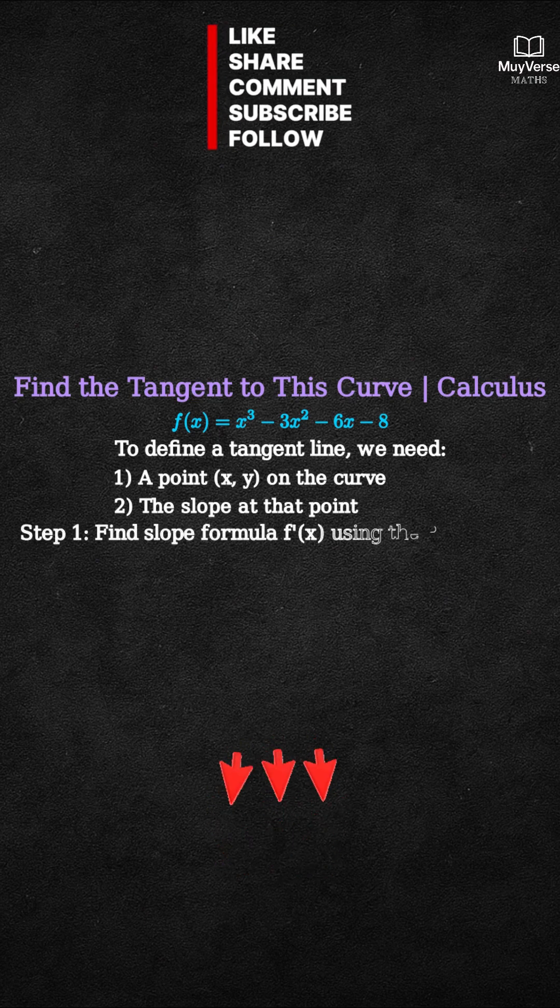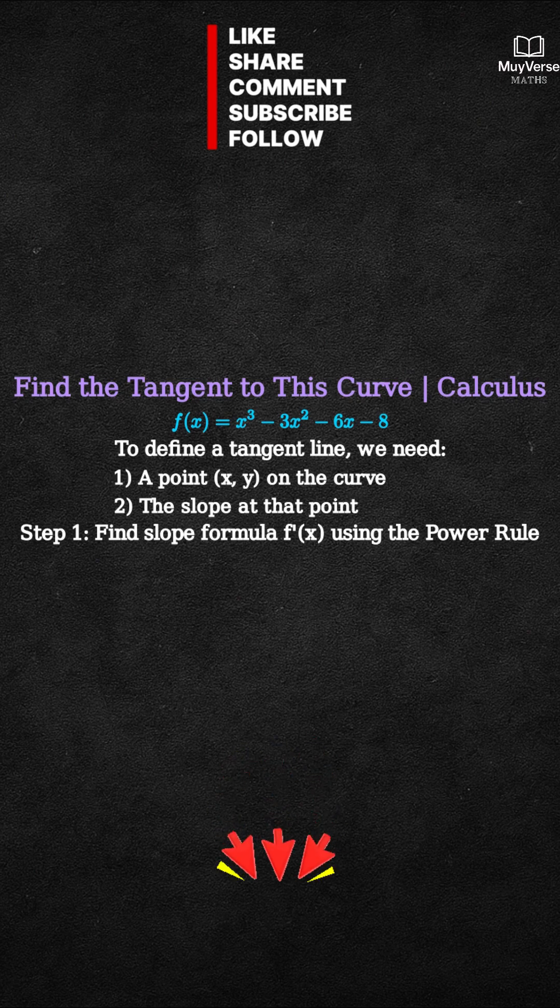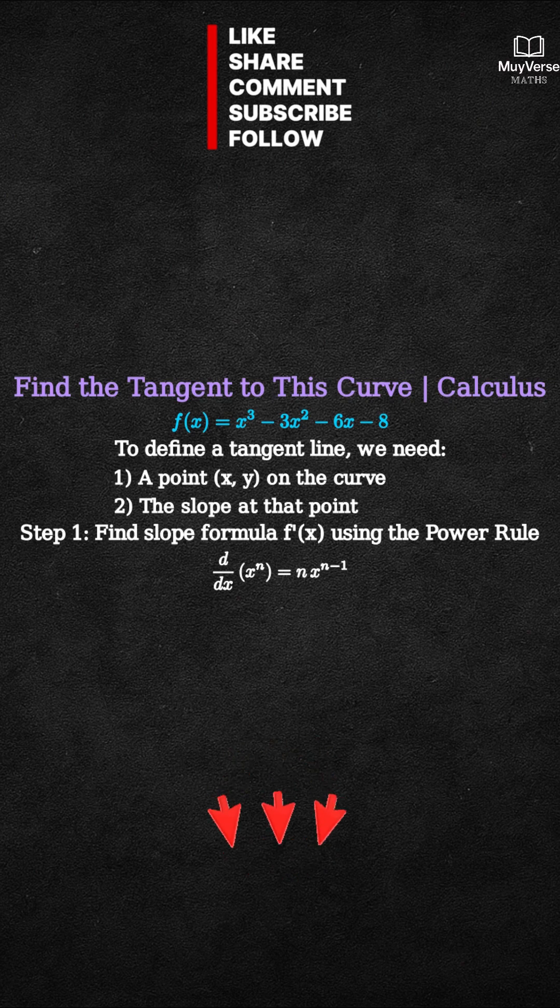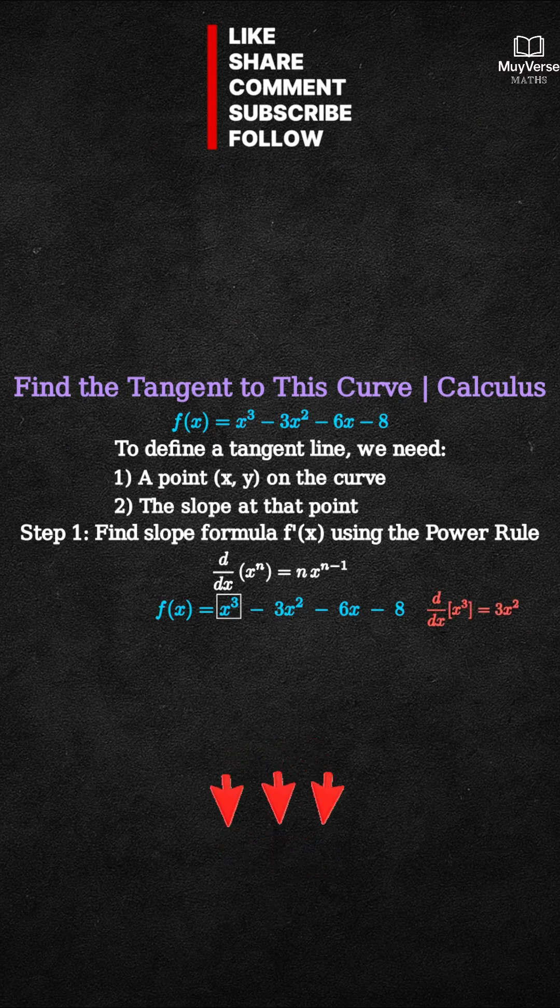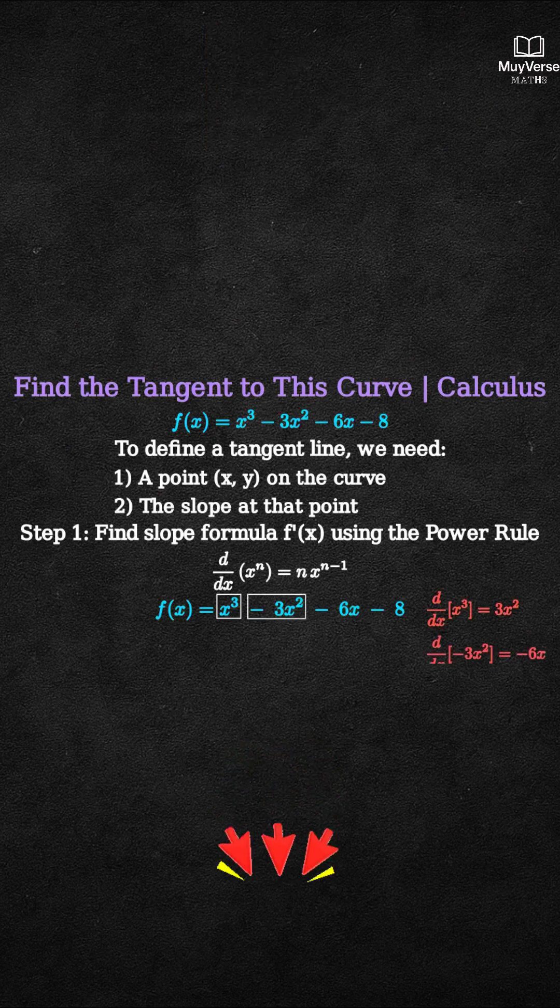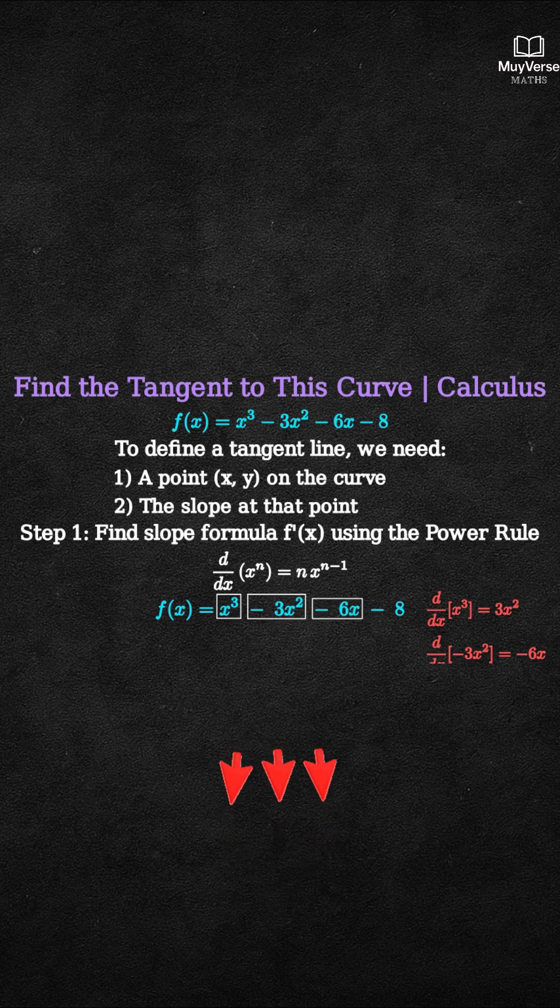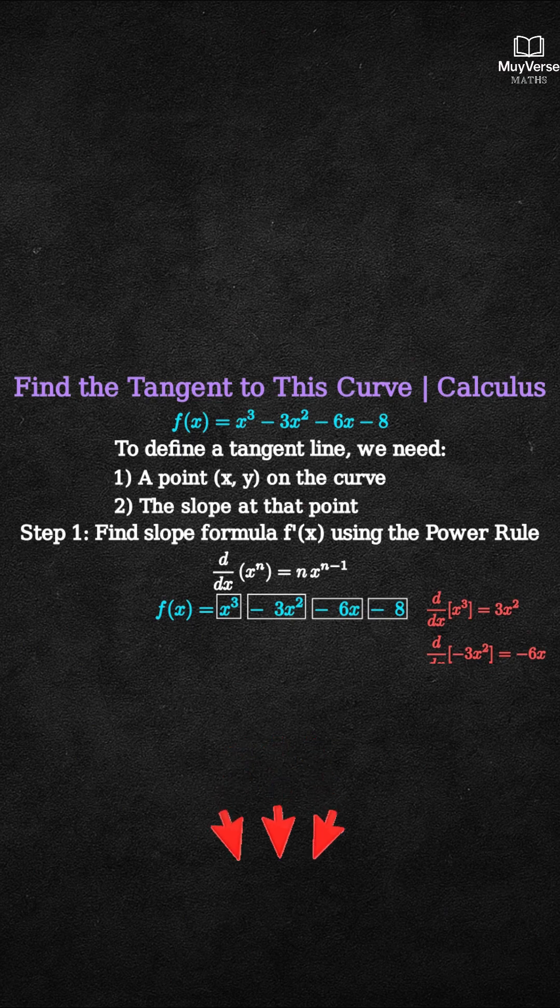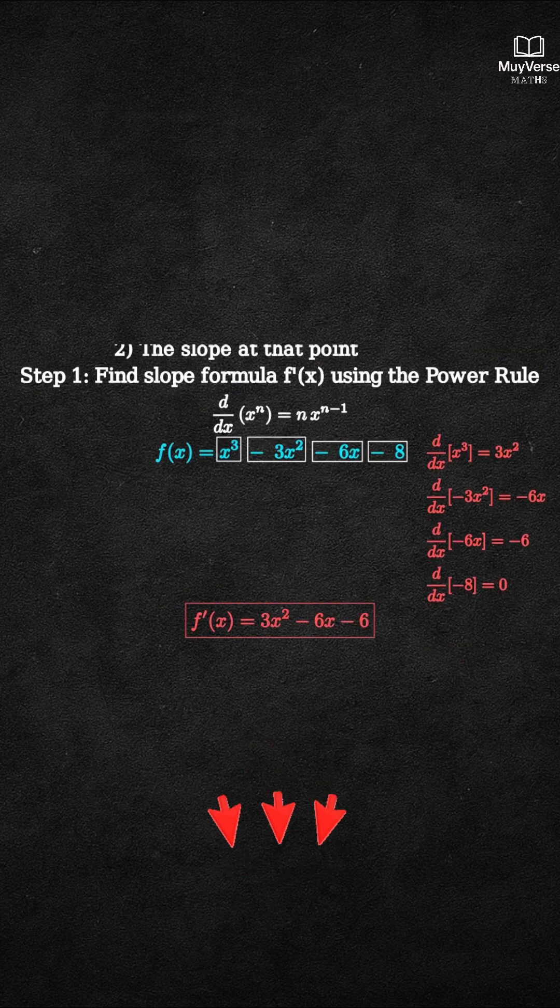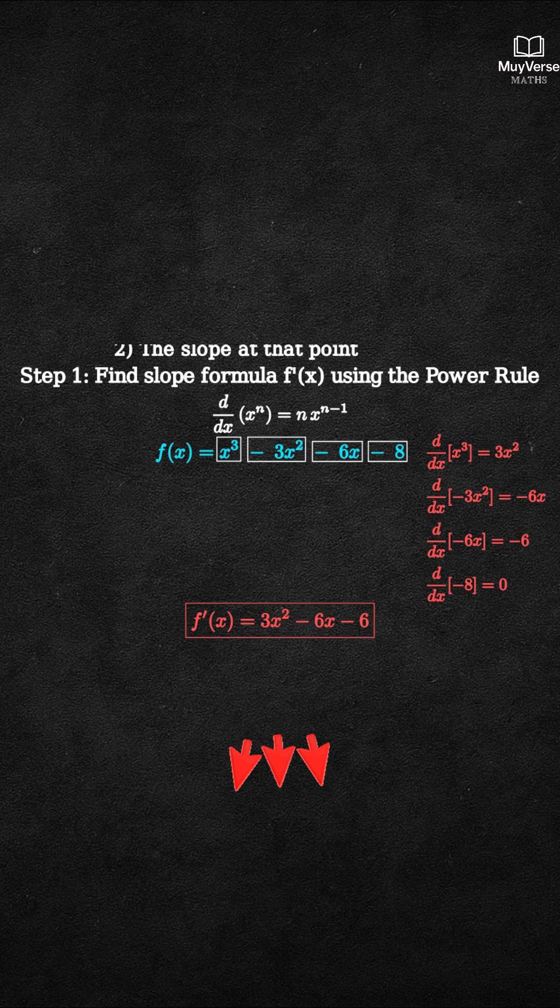Step 1: Find the slope formula using the derivative and the power rule. The power rule says d by dx of x to the n equals n times x to the n minus 1. Let's differentiate each term of f(x). The derivative of x cubed is 3x squared. The derivative of negative 3x squared is negative 6x. The derivative of negative 6x is negative 6. The derivative of the constant negative 8 is 0. So f prime of x equals 3x squared minus 6x minus 6.